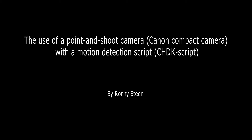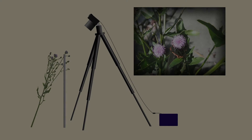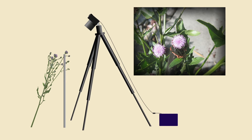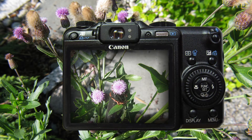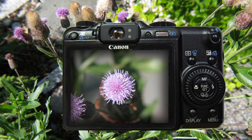The use of a point-and-shoot camera with CHDK script, optimized for automated monitoring of flower visits. I mounted the camera on a tripod facing downwards at one of the flowers on a thistle. I fixed the flower to a pole to minimize movement. Full zoom enabled a proper distance between the flower and the camera.